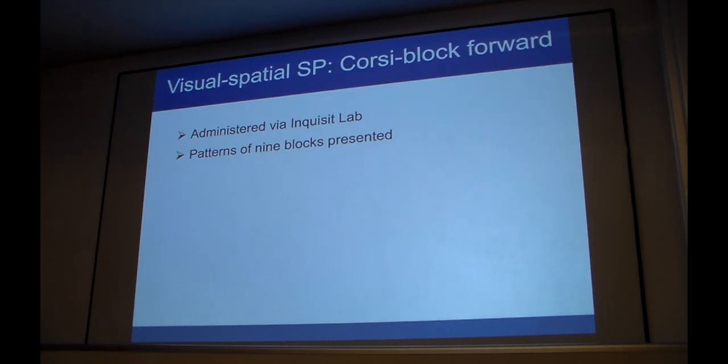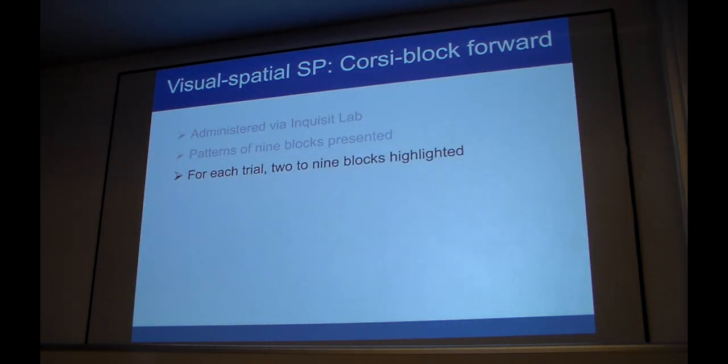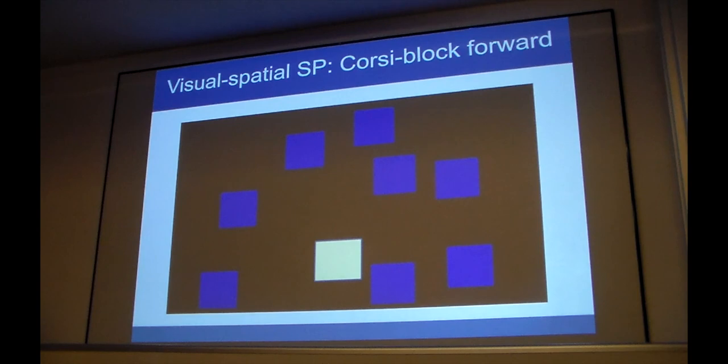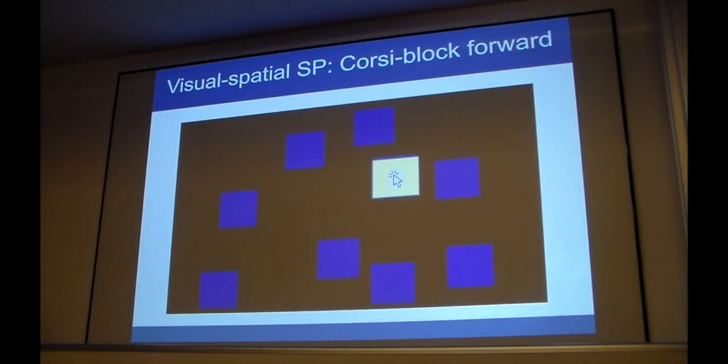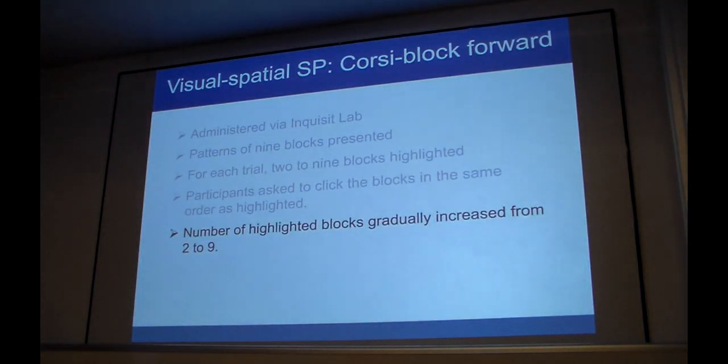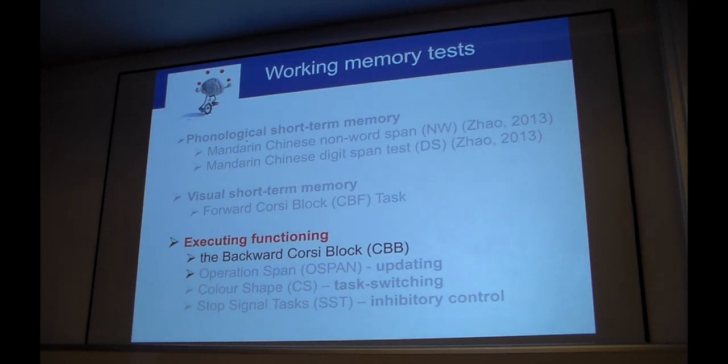The visual short-term memory test was the Corsi block task. This was administered by Inquisit Lab, and this is the way it looked. The participants first saw patterns of nine blocks like this. Then, for each trial, two to nine blocks were highlighted. So one, two, three—do you remember them? And what they had to do, they had to click the blocks in the same order they've seen them. So like this: one, two, three. The number of highlighted blocks gradually increased from two to nine, and the visual span, again, was the highest number of blocks or sequences that participants were able to correctly repeat.